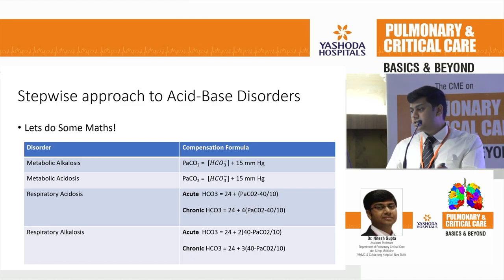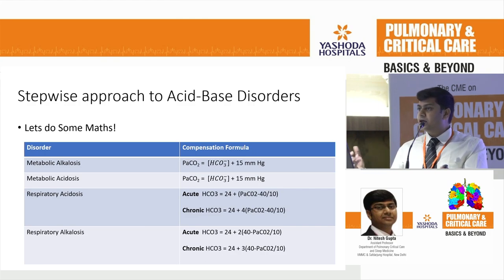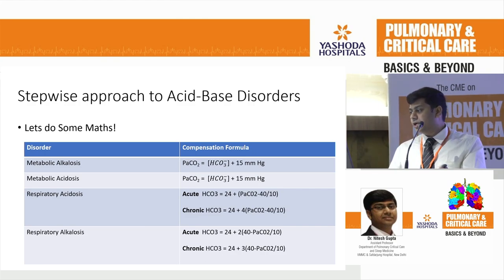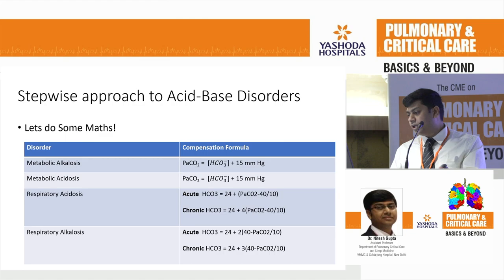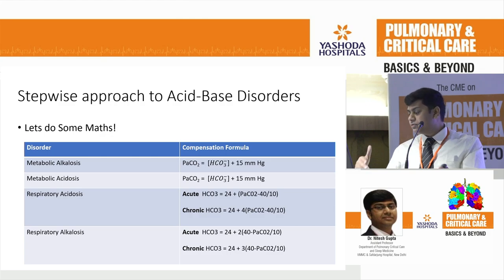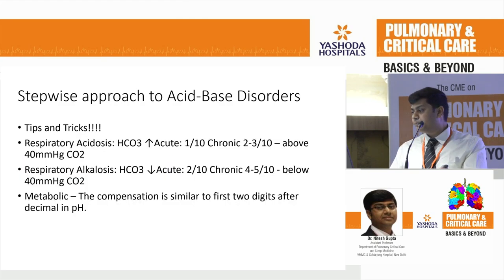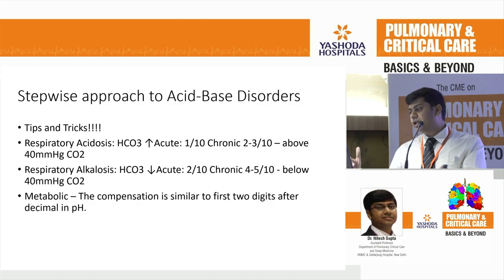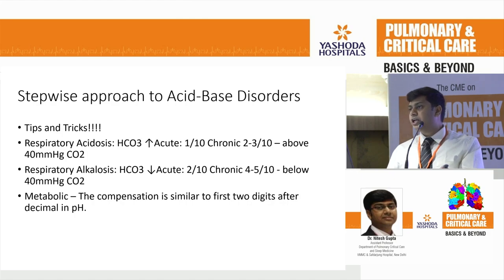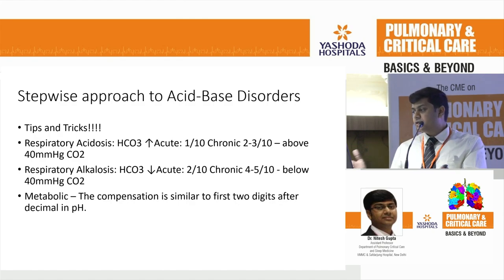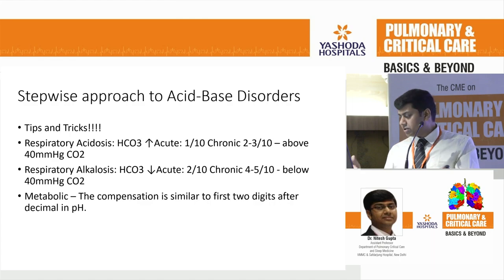In metabolic alkalosis, bicarbonate is rising, so pCO2 will rise to compensate, calculated as bicarbonate plus 15. In metabolic acidosis, it is also added to 15. For respiratory conditions — acute and chronic — a short formula is 1, 3, 4, 5. In respiratory acidosis, if acute, bicarbonate will increase by 1 for every 10 mmHg increase in CO2. If chronic, bicarbonate increases by 2-3 above 40 mmHg. For respiratory alkalosis, the fall is by 2 or 4-5. In metabolic compensation, the pCO2 corresponds to the first two decimal digits of pH — this works in most conditions.